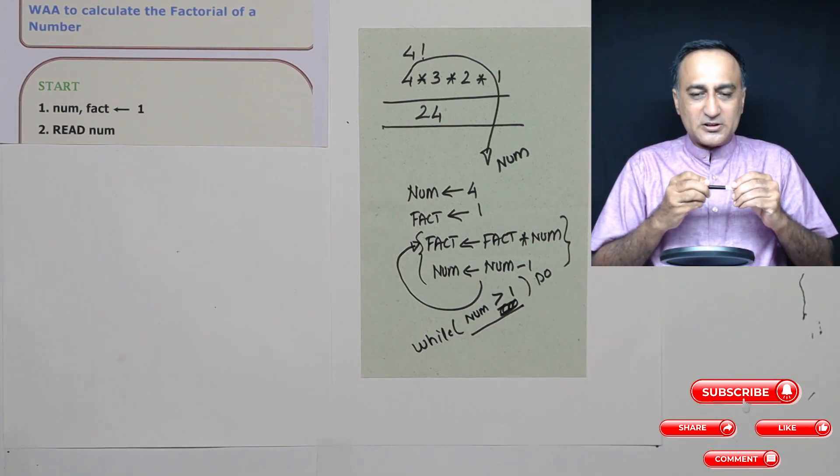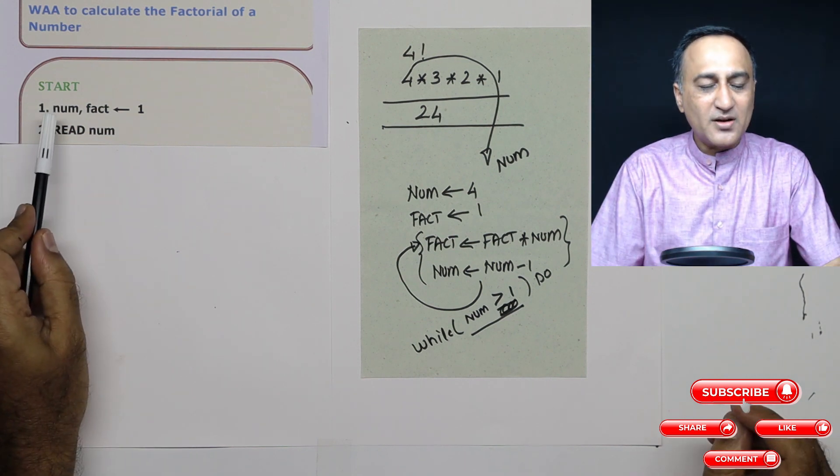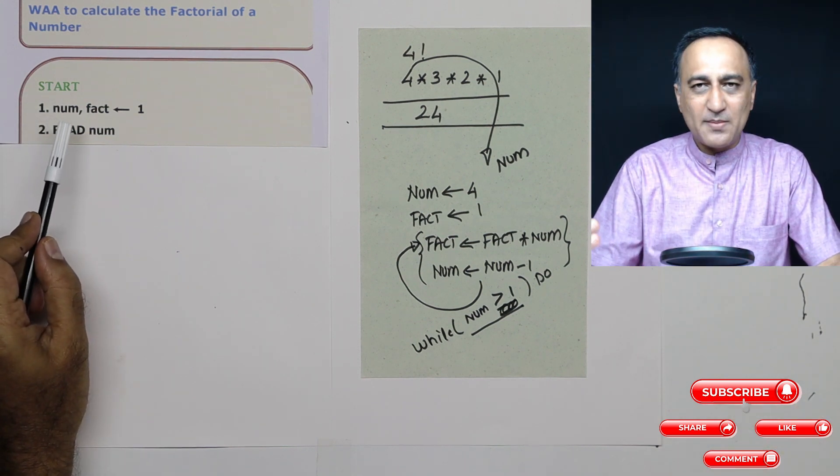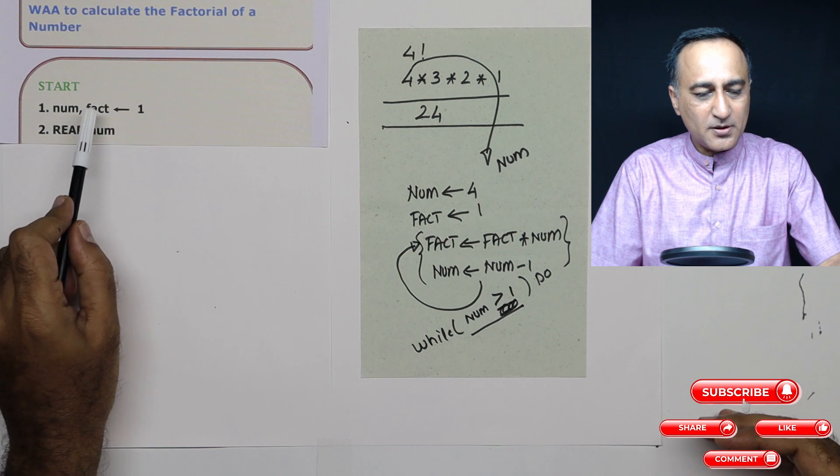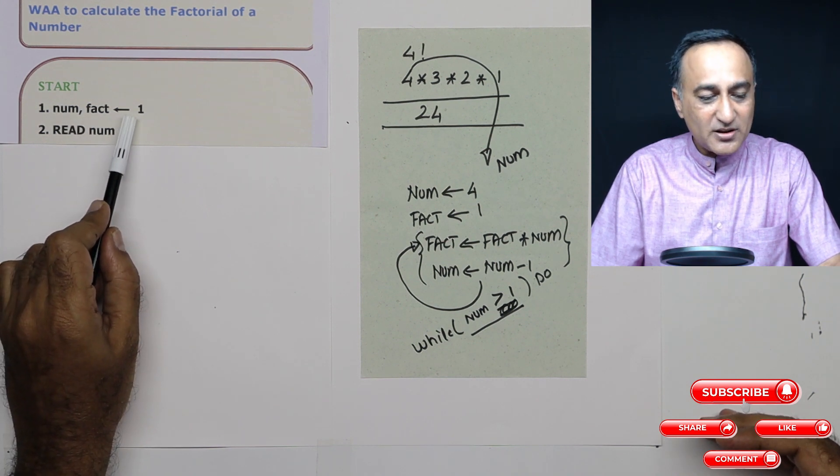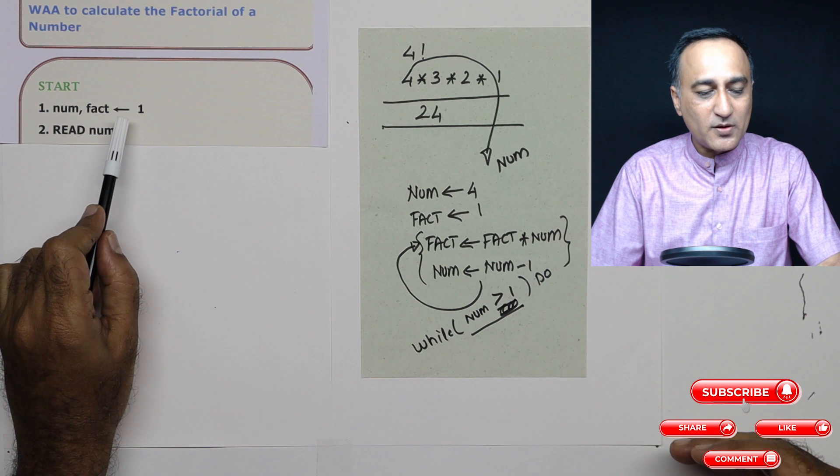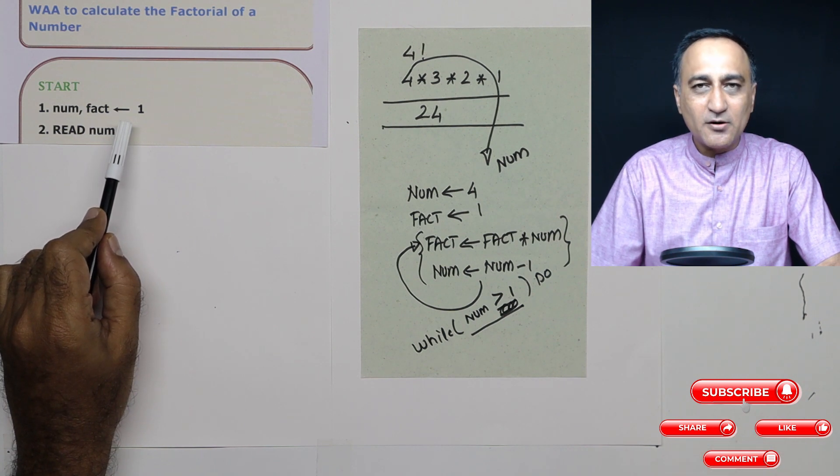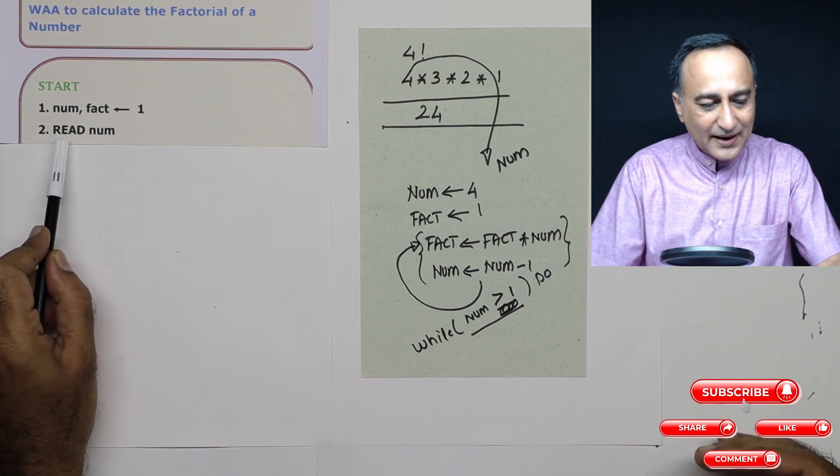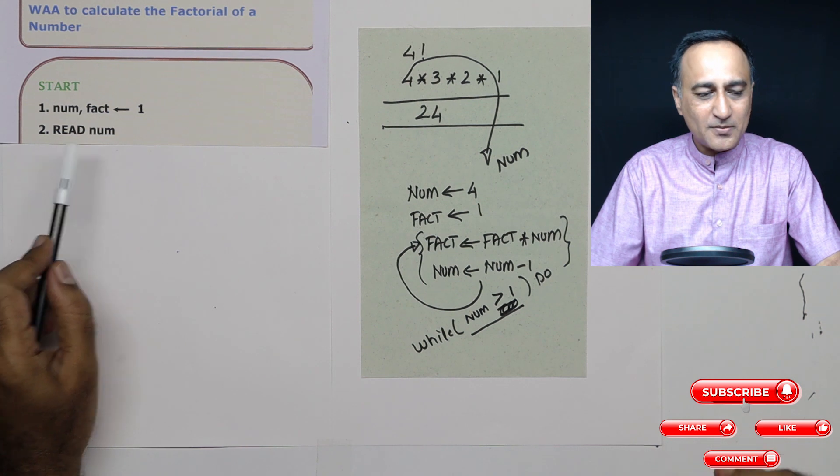So I just need two variables. The first variable is number, I have not given it any initial value, because I'm going to ask the user to enter the number. Next variable name is fact, I must give it the value one. You will know why I give it the value one once we are doing a little bit of test runs.